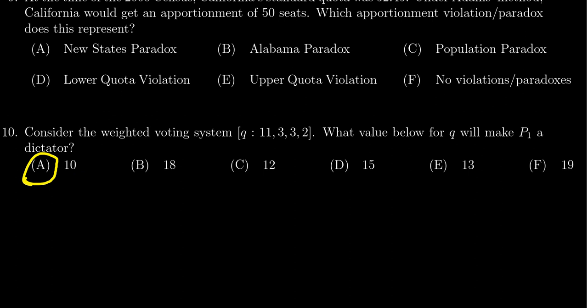Now if you look at the other ones, I do want to show you why they don't work. Like if you tried 18 here, if you did 18, 11 is not enough by itself. So the thing is, player 1 by itself is not a winning coalition, which is an equivalent condition to being a dictator.